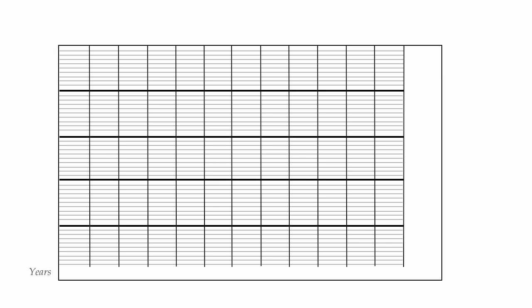He then added a lot of vertical lines, giving him a beautiful piece of graph paper to start graphing on. Across the horizontal axis he added years, and he used pounds of course because he was English, with major values at one, two, three, and four million pounds.